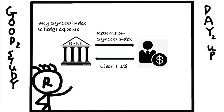The investor says: 'Sure, I want to buy five million dollars worth of TRS — let's sign the contract.' So in this contract, the bank will pay the investor the returns on the S&P 500 index, and the investor will pay the bank LIBOR plus one percent. If the S&P 500 index goes up by ten percent, the bank would pay the investor five million dollars times ten percent, which is five hundred thousand dollars, and the investor will pay the bank LIBOR plus one percent.